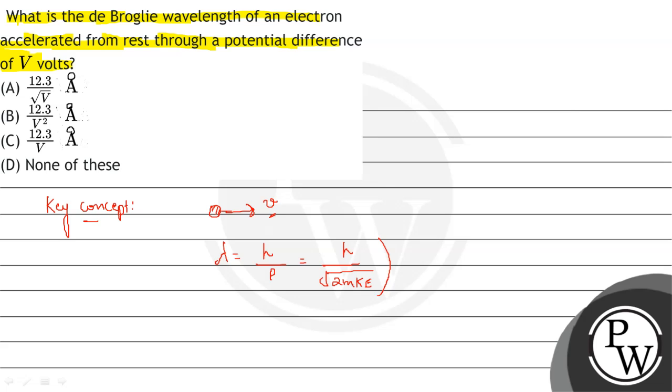This is lambda. So here, lambda equals to H by under root 2 M K. Further, we can write lambda equals to H by...